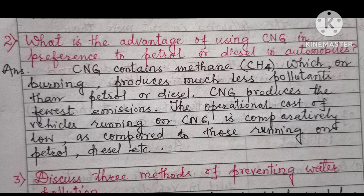Question 2: What is the advantage of using CNG in preference to petrol or diesel in automobiles? Answer: CNG contains methane which on burning produces much less pollutants than petrol or diesel. CNG produces the fewest emissions. The operational cost of vehicles running on CNG is comparatively low as compared to those running on petrol, diesel, etc.